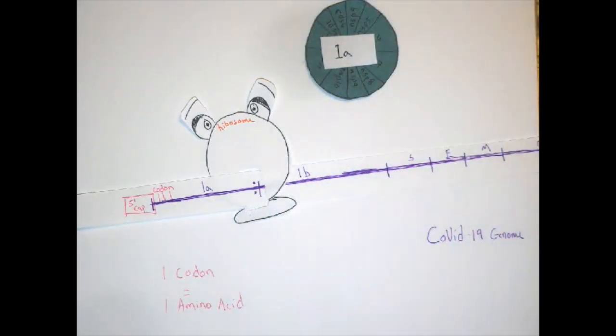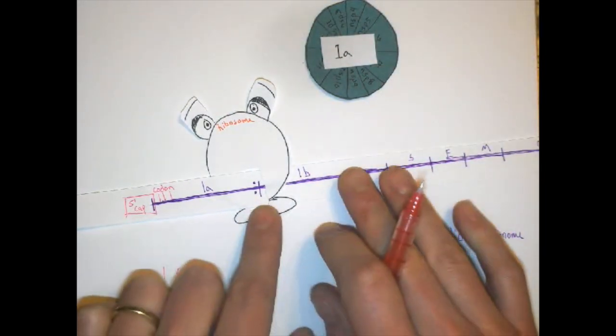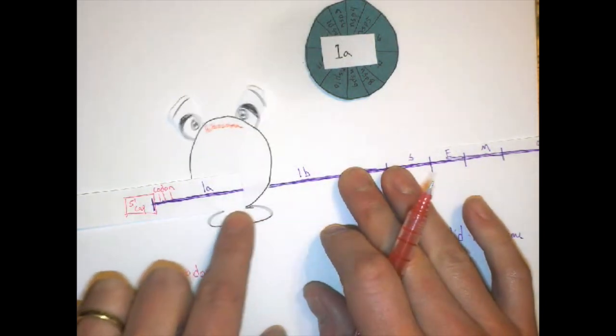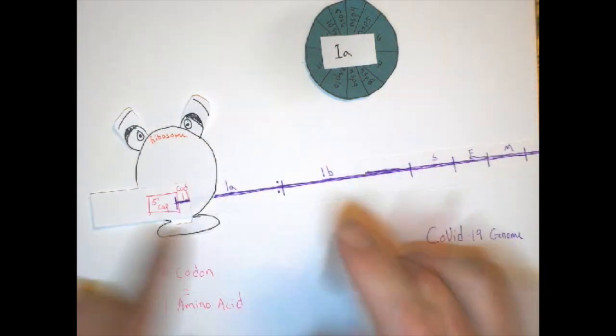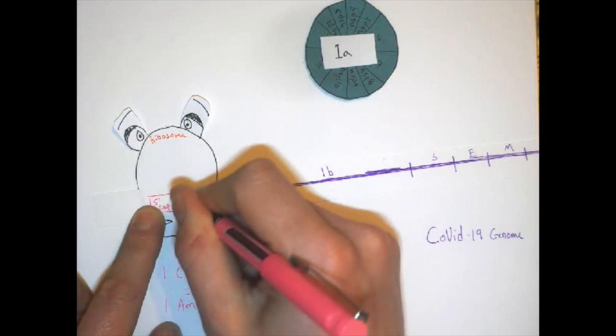Then, and this is where it starts to get weird, the ribosome runs into a coding sequence that forces it to turn around and read the same ORF again. This time, offset by one base pair.